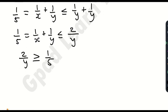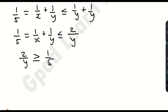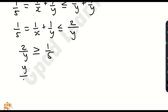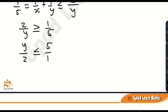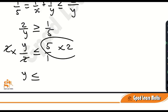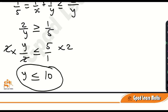Now let's get the range of values of y. We take the reciprocal of both sides. When you take the reciprocal of an inequality, the inequality sign automatically changes — just as we saw earlier. So y/2 is now less than or equal to 5. Multiplying both sides by 2, we get y is less than or equal to 10.